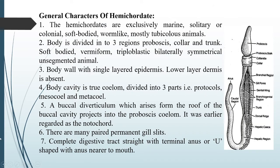The body of Hemichordata is divided into three regions. The uppermost or first part is the proboscis, the middle part is called the collar, and the tail part is called the trunk region. So the body is divided into three parts: proboscis, collar, and trunk.